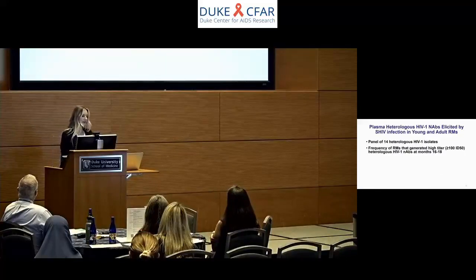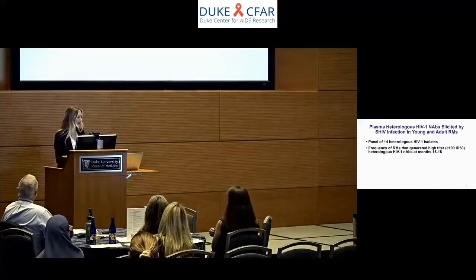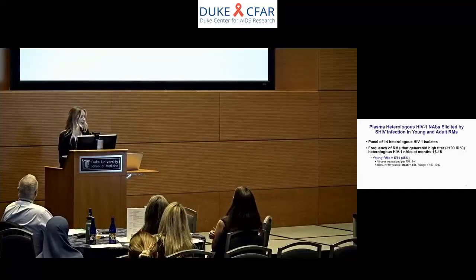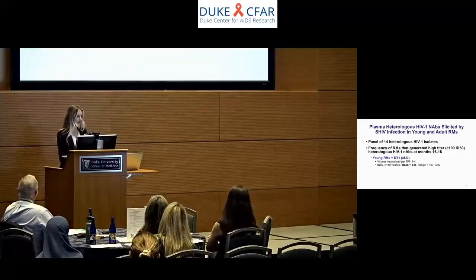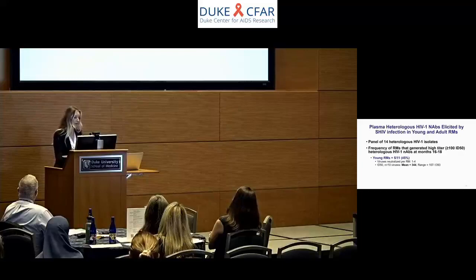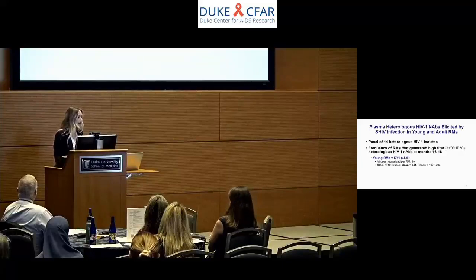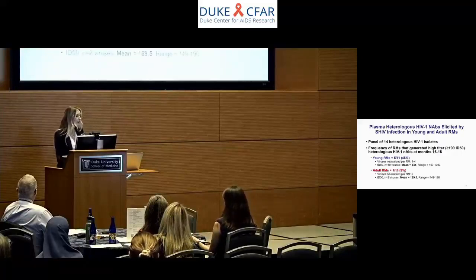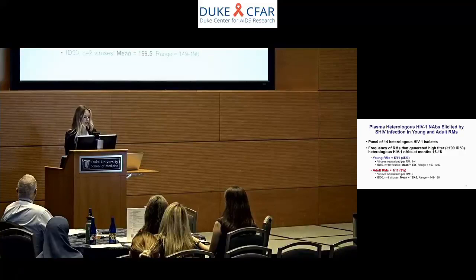We also tested plasma from young and adult macaques over time for neutralization of a panel of 14 heterologous HIV strains, including the global panel of HIV reference strains used to assess breadth of HIV neutralizing antibodies. At month 18 post-infection, 5 of 11 young macaques generated plasma antibodies neutralizing 1 to 4 heterologous HIV strains at relatively high titers exceeding ID50 values of 100, with an average neutralization titer of 344 ID50. In contrast, only 1 of 11 adult macaques generated plasma antibodies at month 18 neutralizing 2 heterologous HIV strains at an average titer of 169.5 ID50.